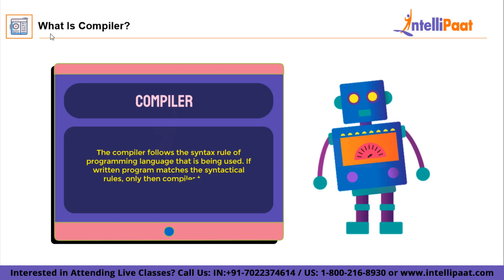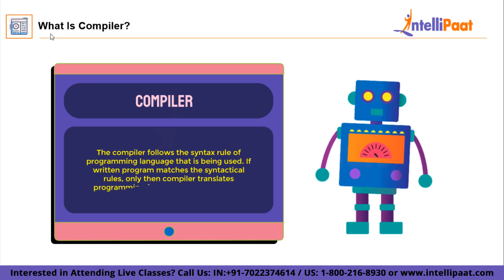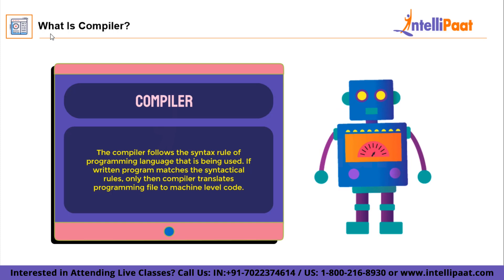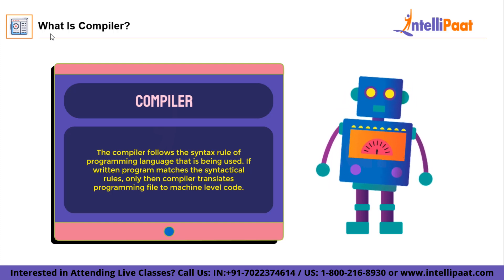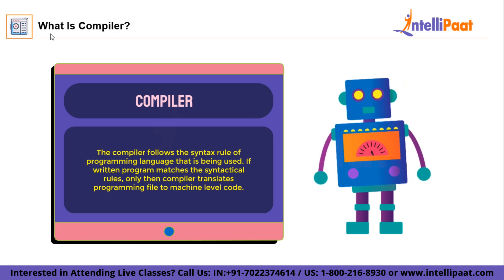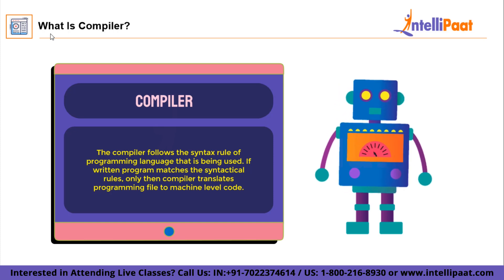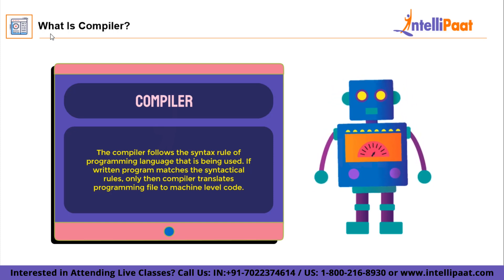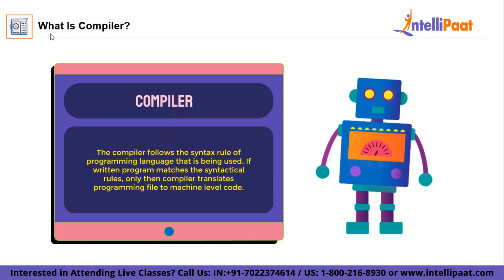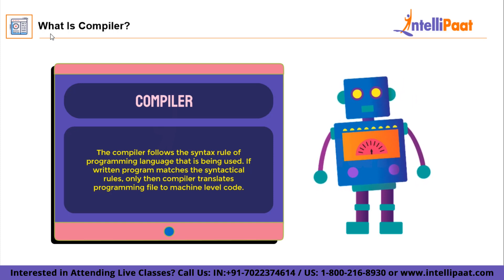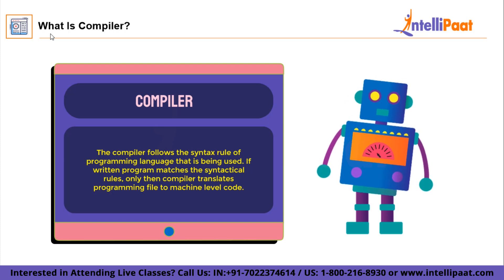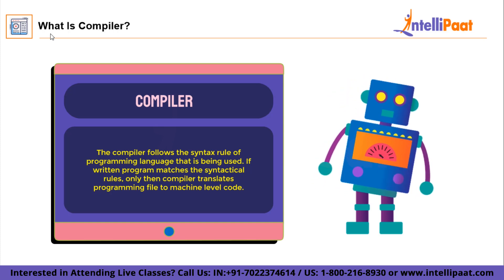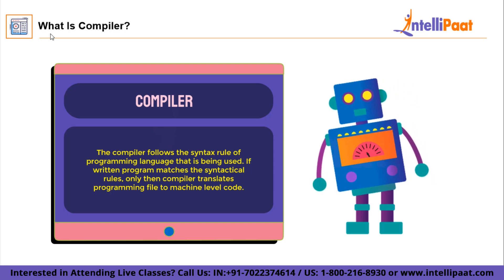The compiler follows the syntax rules of the programming language that is being used. Because of that, if the syntax of the program does not match the analysis of the compiler, an error arises that has to be corrected manually. If your written program is correct and does not contain any error, then the compiler will convert your entire source code into machine code — the whole program all at once.